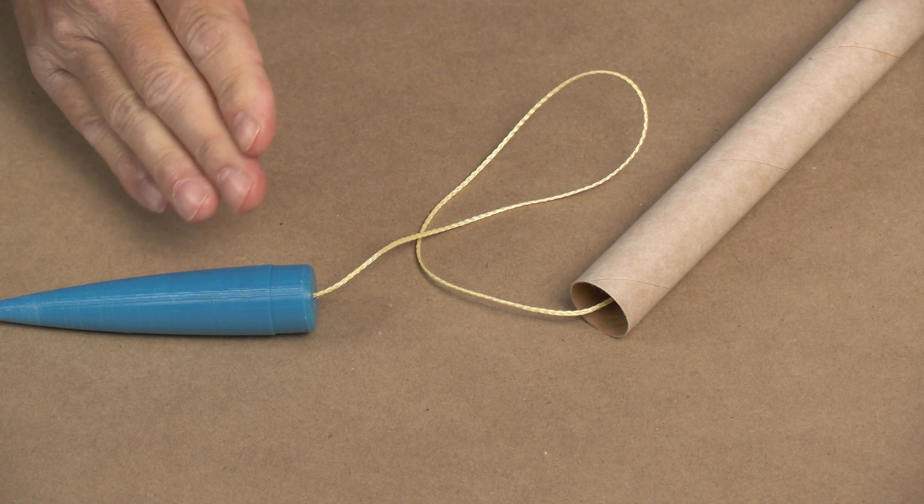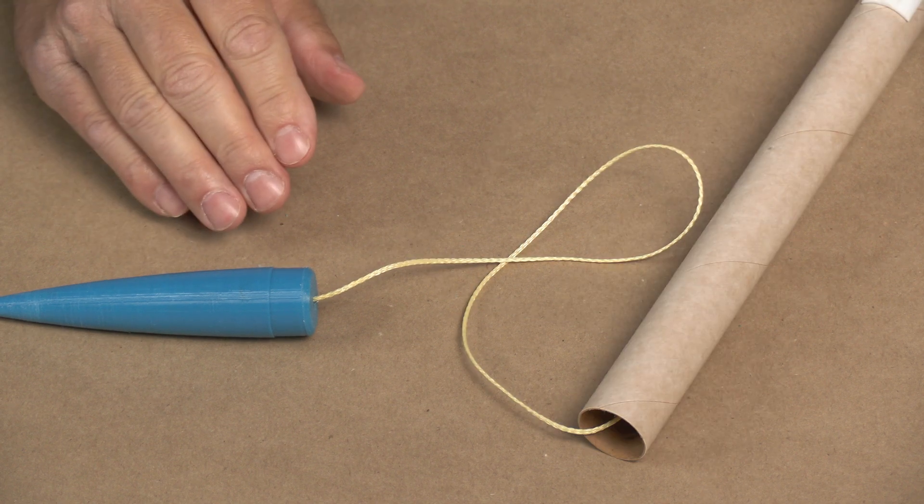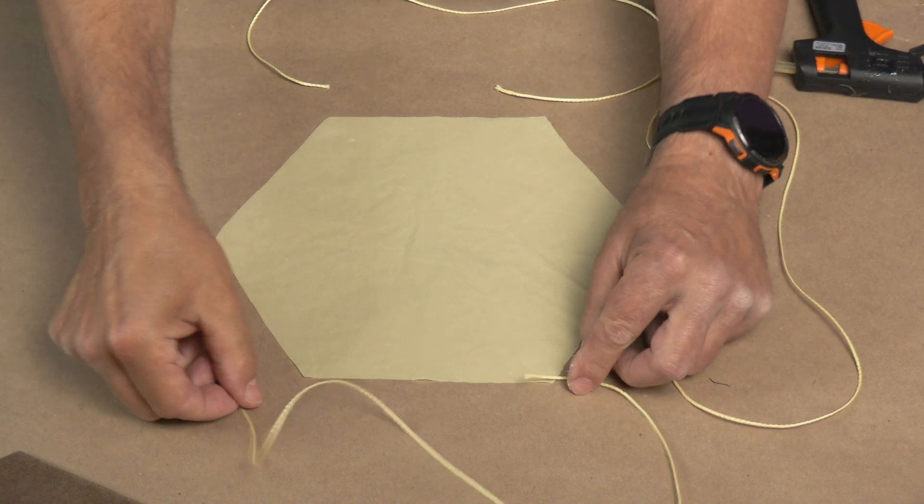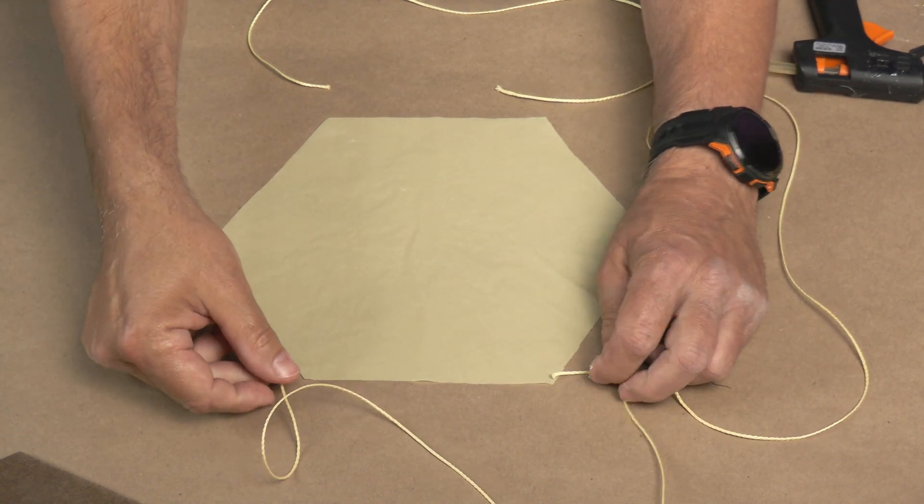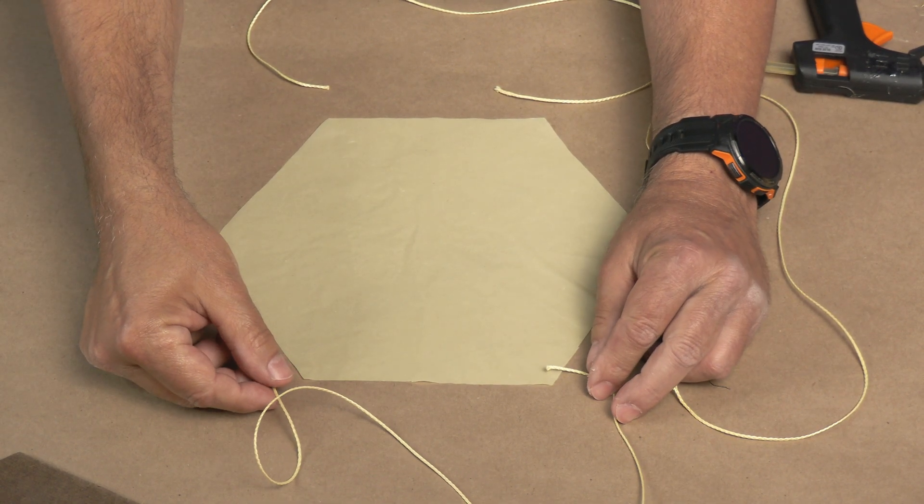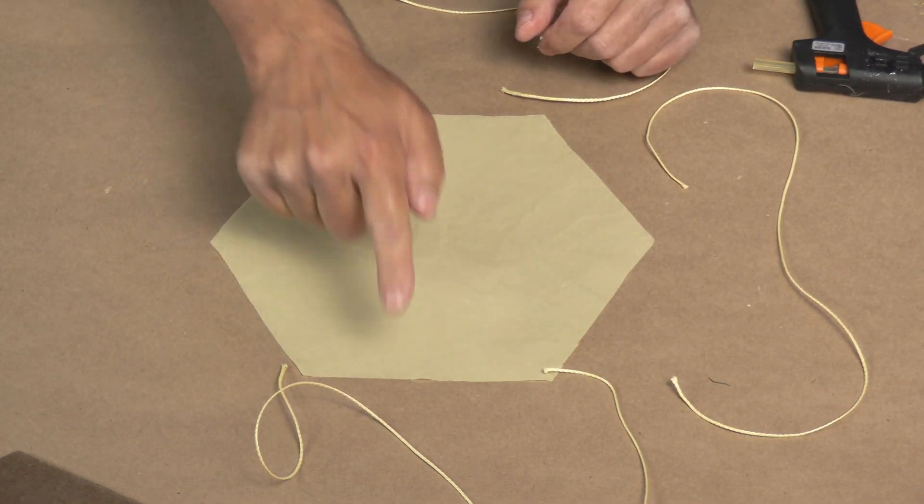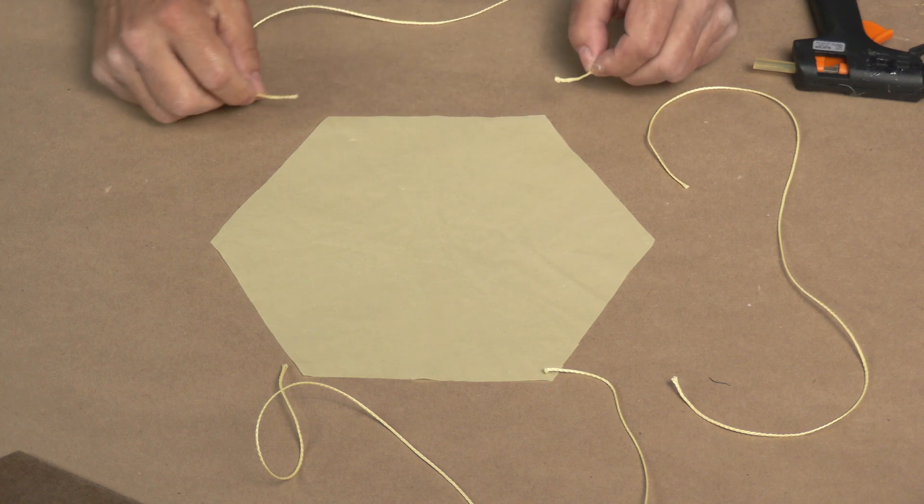The parachute is made from a plastic table cover. And I'm using the same Kevlar string, 300 pounds. And each string is 22 inches long. And that will span from one side to the other.